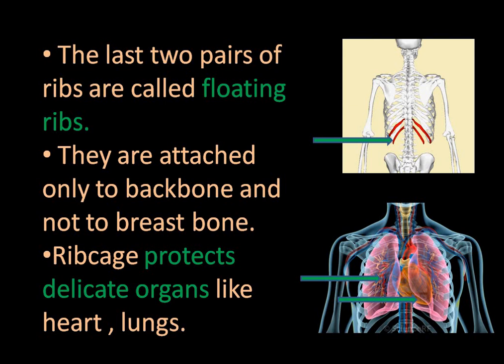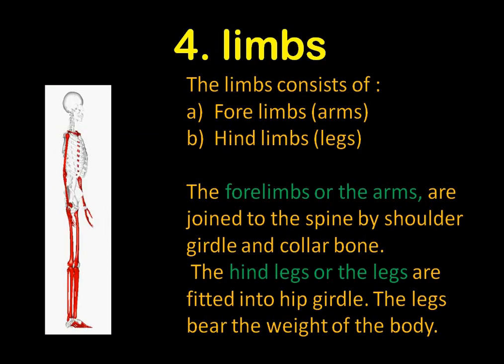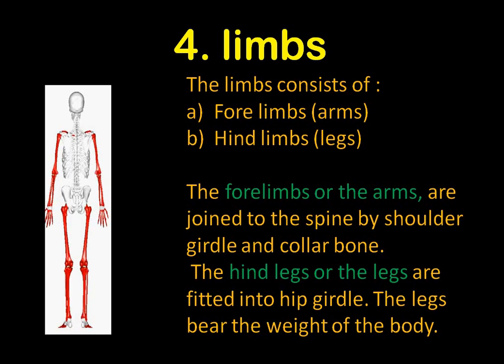The two floating ribs are only attached to the backbone, not to the breastbone. Now, the function of the rib cage is to protect delicate organs — your heart and your lungs. Inside the rib cage are your lungs and your heart, so the main function of the rib cage is to protect your heart and lungs.